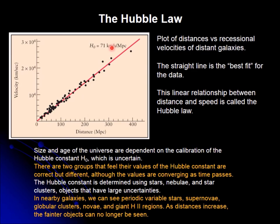The speed is in kilometers per second and the distance is in megaparsecs. The value of 71 is well contested — there are different values, but little by little different groups have been approaching this average. There is some discrepancy with the Hubble law, and all of that has to do with how accurately we can determine the distance. We're going to see methods for determining the distance.